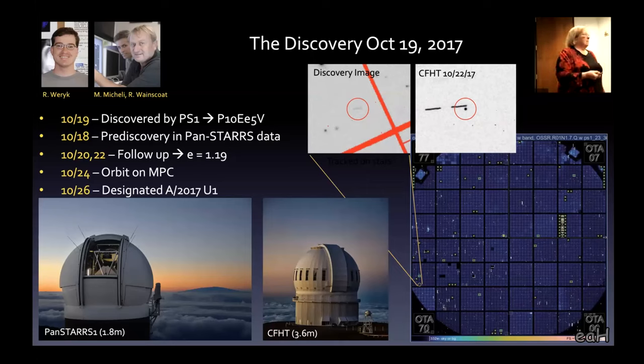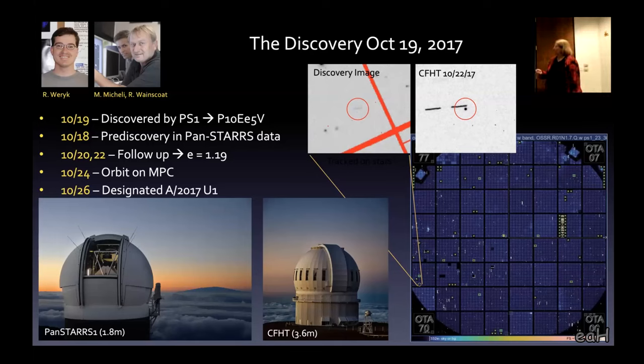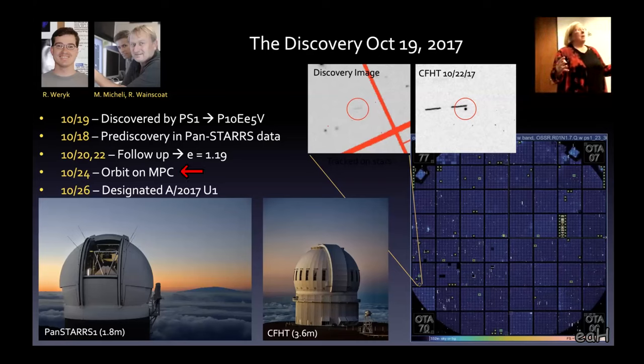The head of the survey, Richard Wainscote, called me at home on a Sunday. I'd just gotten back from a big science meeting. He goes, I think we found an interstellar object. And my first thought was, did it really have to be today? And then I got excited because I knew what this was going to mean.